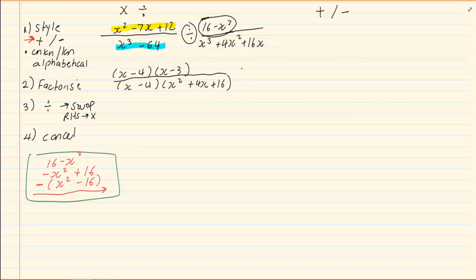Then we are going to multiply. When we multiply, we are going to swap the one on the right hand side of the division. On top, we are going to have x cubed plus 4x squared plus 16x. All over, remember we have changed 16 minus x squared into negative, open brackets, x squared minus 16.